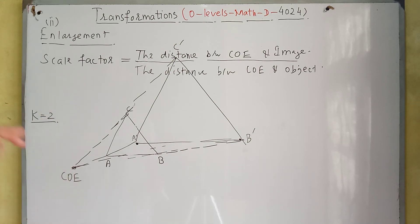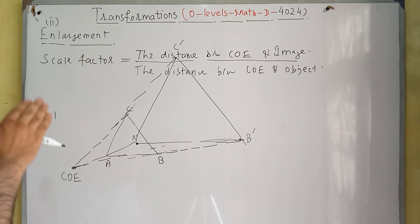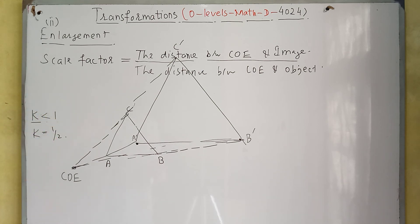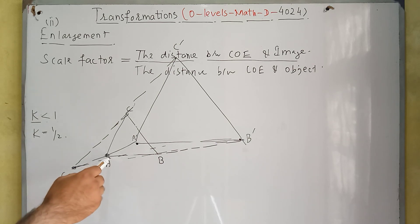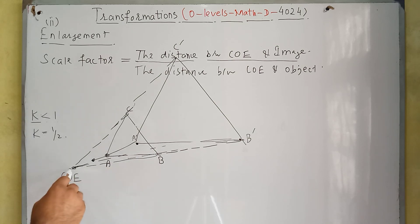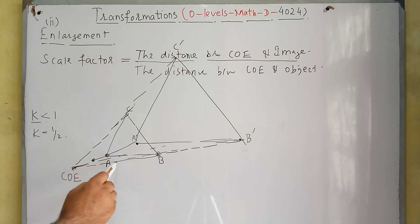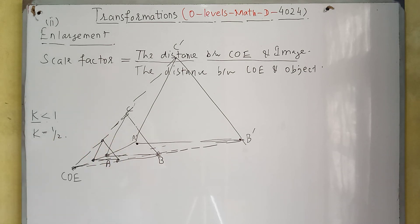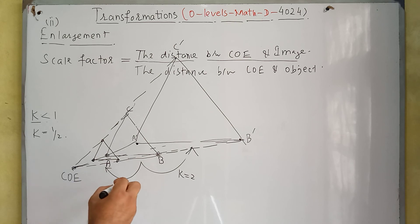This enlargement changes if the scale factor is less than one. For example, if scale factor is one-half, this is not called enlargement — it is called reduction. The distance between the center of enlargement and point A was 8 centimeters, so with scale factor one-half, this distance becomes half and we come to this point. Similarly, the distance to point B becomes half, and the distance to C becomes half, giving us a smaller triangle. This is called reduction when scale factor is less than one, and enlargement when scale factor is greater than one — for example, scale factor 2.